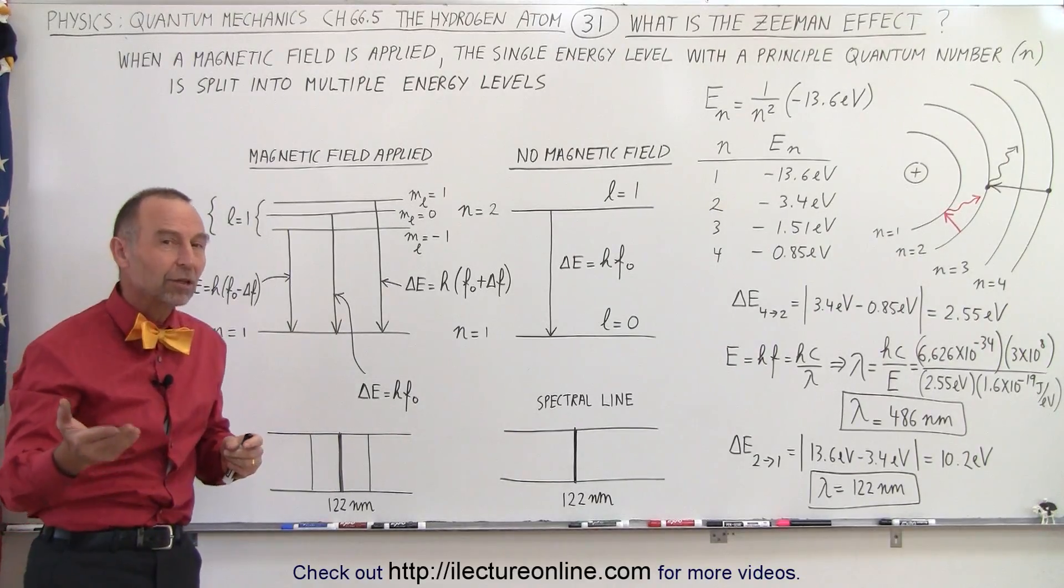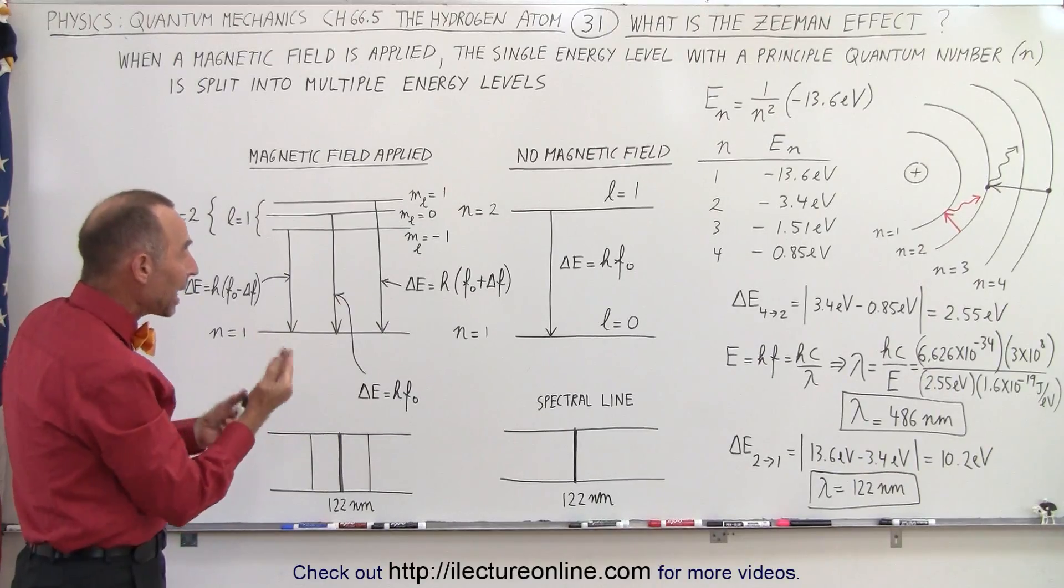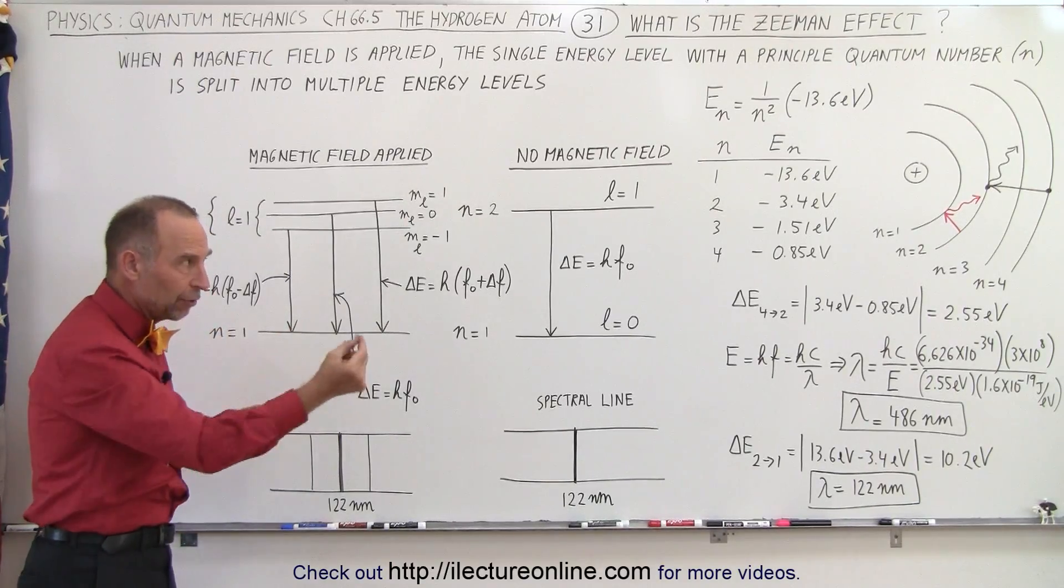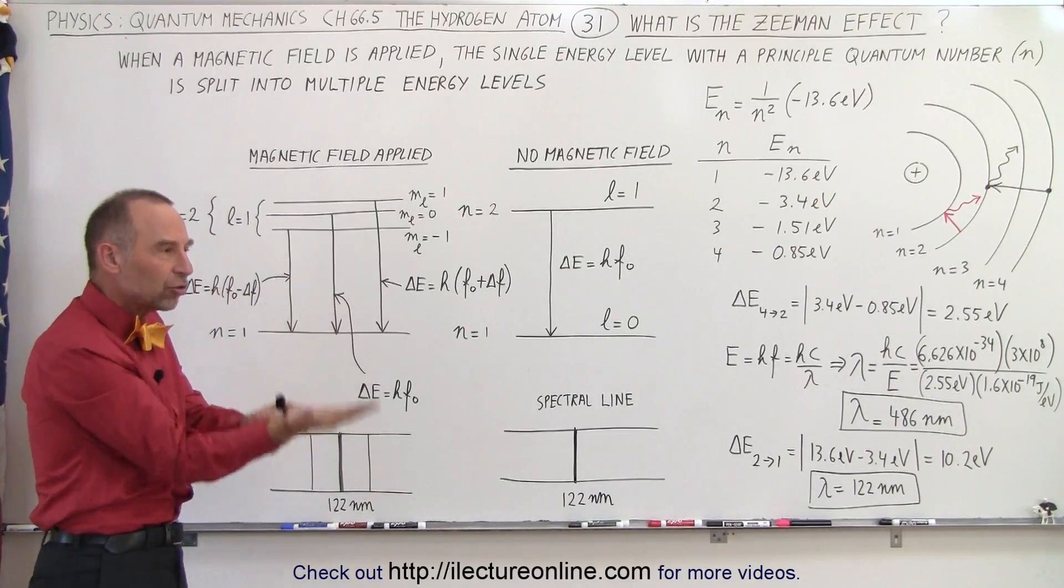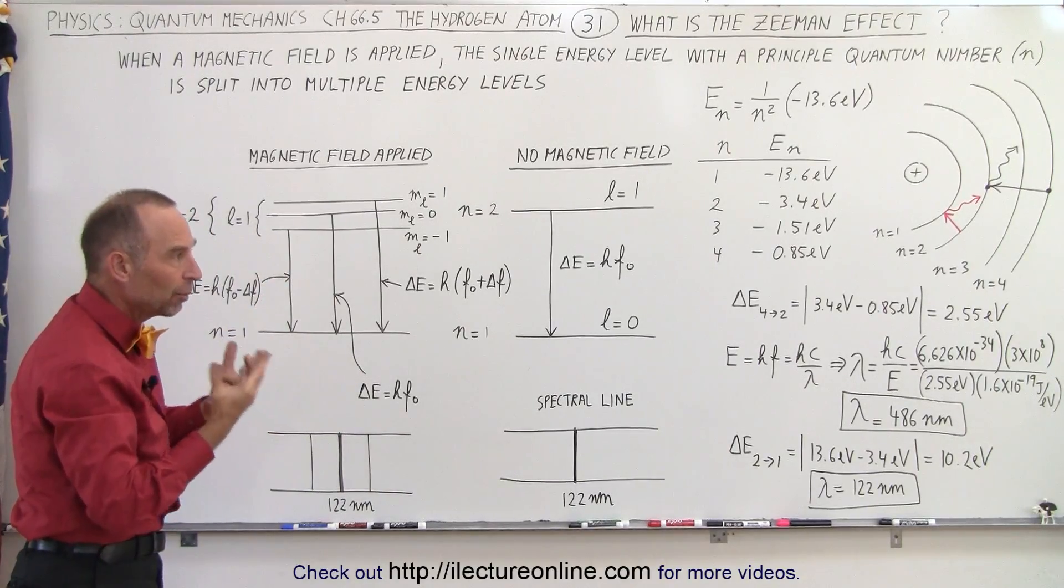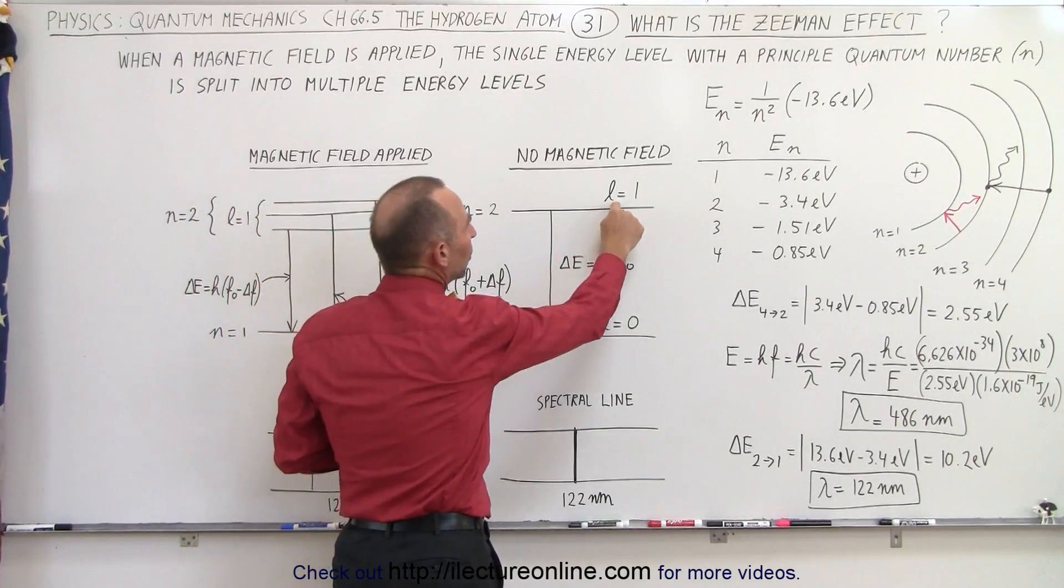If you saw the previous several videos, we realized that the angular momentum of the orbiting electron can only have discrete directions. The number of discrete directions depends upon L, which is the orbital quantum number.